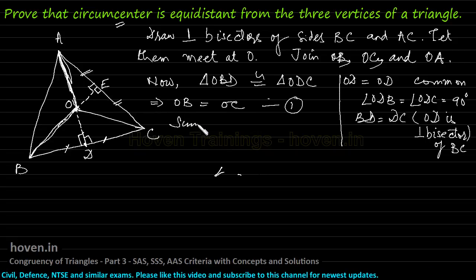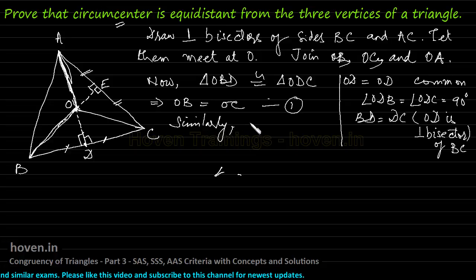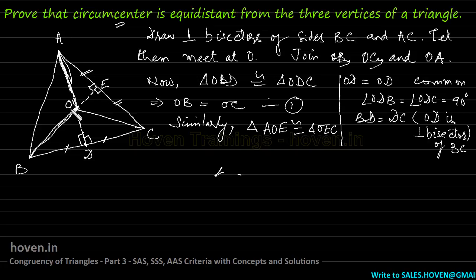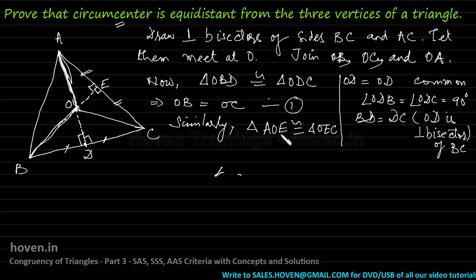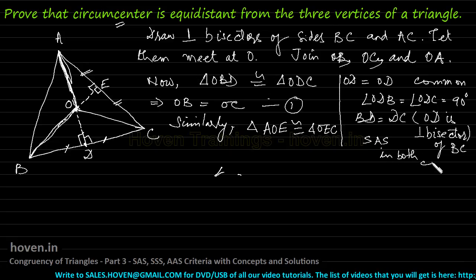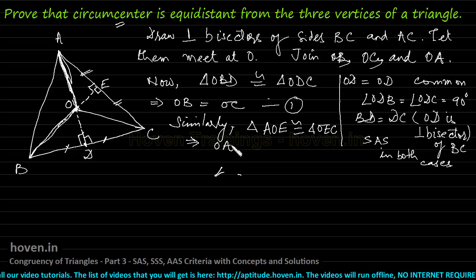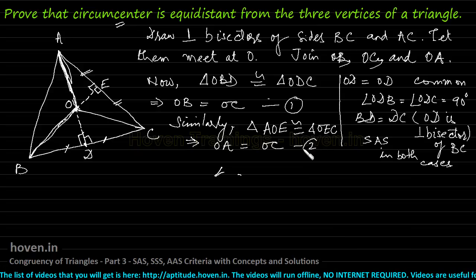On the same pattern, similarly, we can take triangle AOE and see that it is congruent to triangle OEC. I am talking about this triangle and this triangle — again they are congruent by SAS: this side equals this side, this angle is 90, and this is common. So triangle AOE and triangle OEC are congruent by the SAS rule. Because this triangle is congruent to this triangle, OA should be equal to OC. This is fact 2.